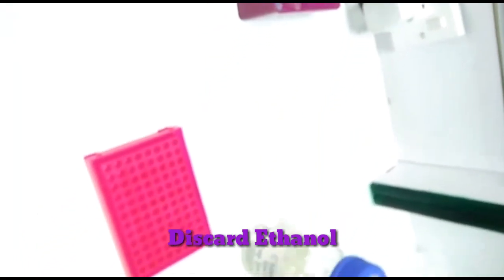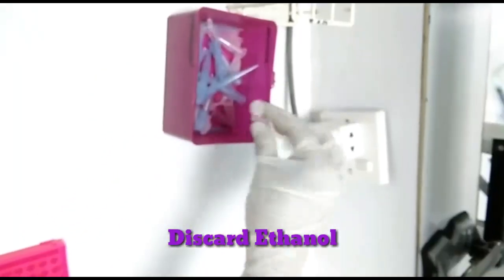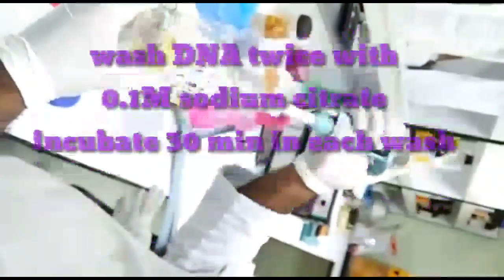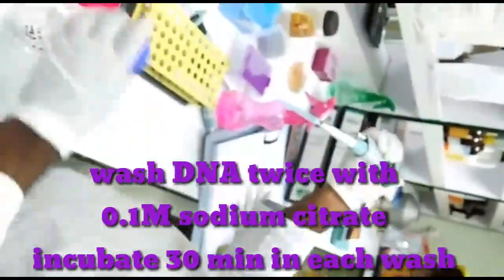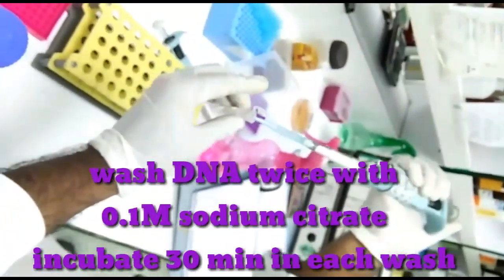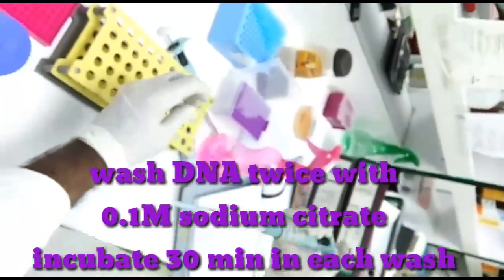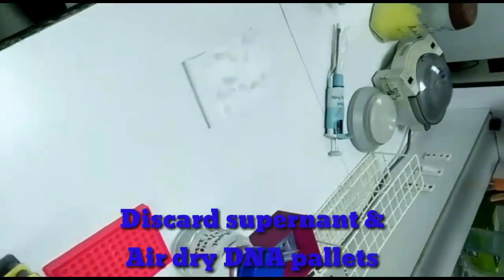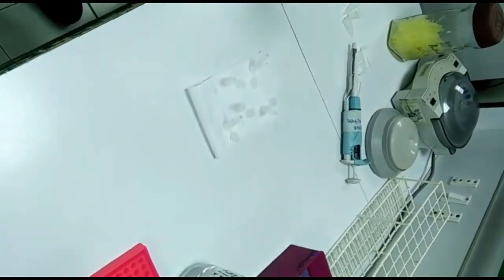After that, discard the ethanol carefully and suspend DNA pellets in sodium citrate solution twice. Sodium citrate solution must be prepared in 10% ethanol. Then remove the sodium citrate solution and air dry DNA pellets.